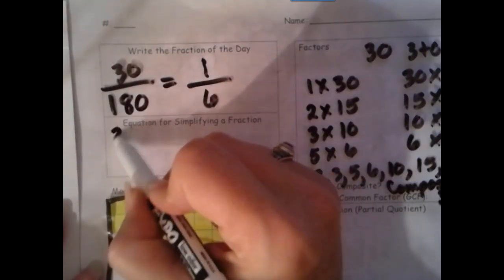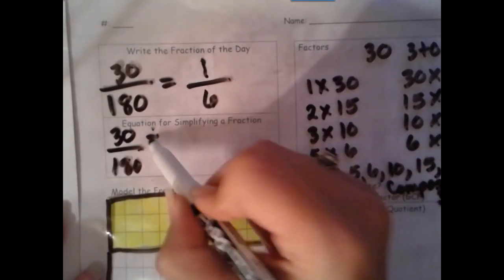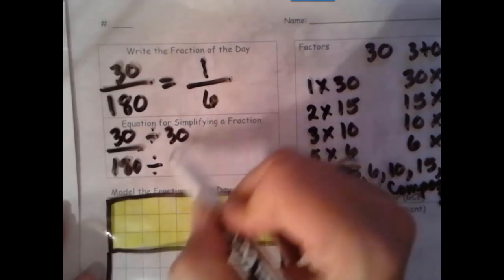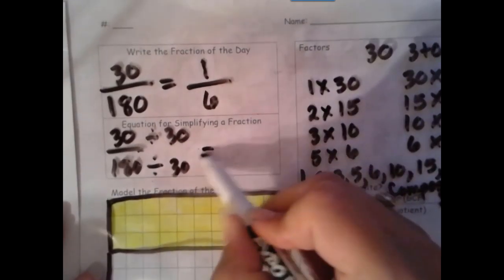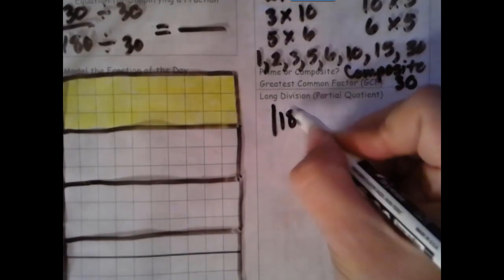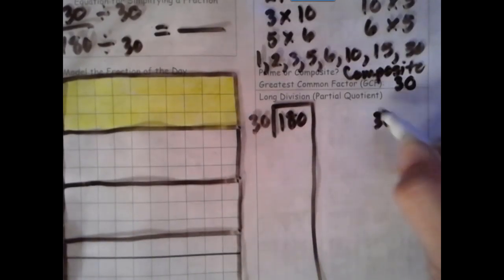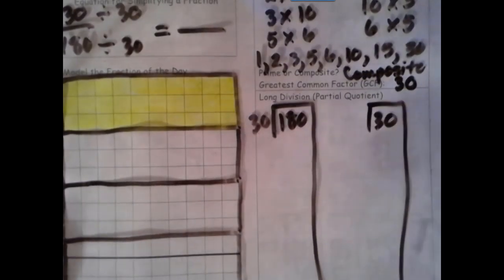We've done our division with our model. Let's go ahead and do it with our algorithm. We're dividing both by our greatest common factor. So 180 divided by 30 and 30 divided by 30.